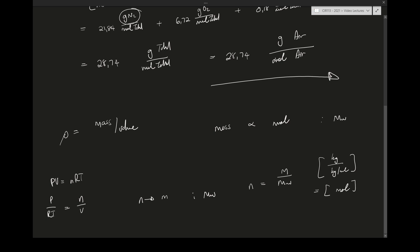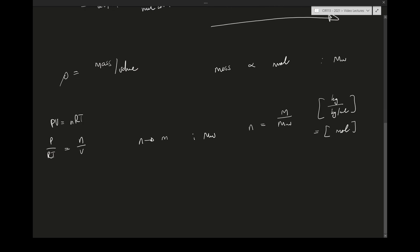Now substituting this into our ideal gas law, we have that P over RT equals m over V multiplied by the molecular mass. Seeing that we know that rho equals mass over volume, this will become rho over the molecular weight.